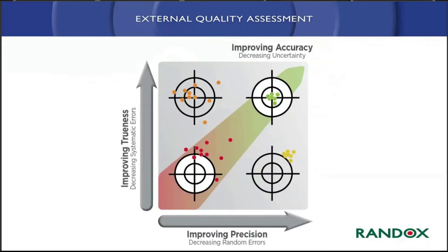Talking about what we're aiming to achieve whenever we're running our external quality assessments. We're looking to improve our accuracy. The end goal is to improve accuracy, but it's not really just worthwhile improving our precision, although that is a very good starting point, because if we improve our precision that gives us a much clearer picture of potentially how we can improve our accuracy.